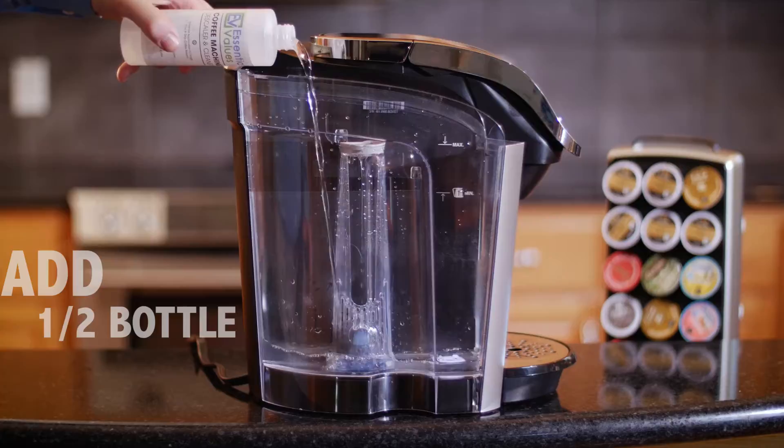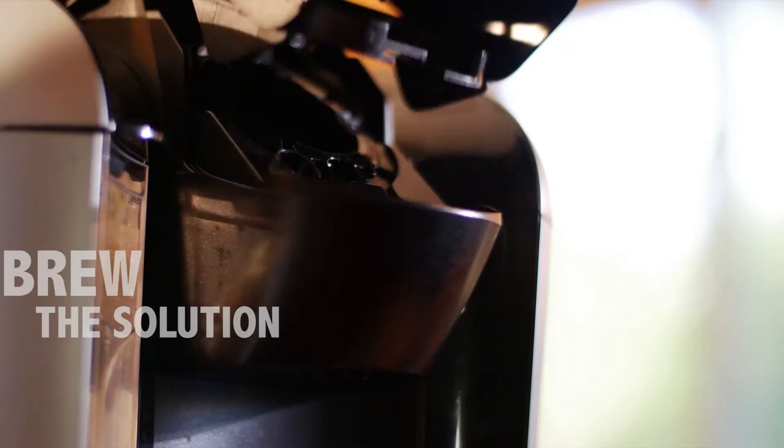Simply add half a bottle of the Essential Values Descaler Cleaning Solution into the water reservoir. Add water and brew the cleaning solution through the coffee maker.